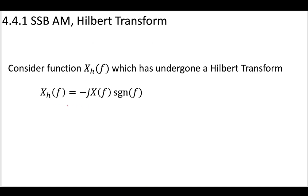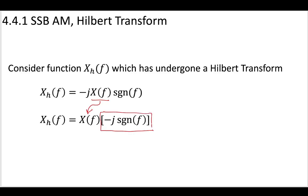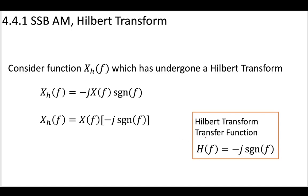Consider in the frequency domain x_h, which has undergone the Hilbert transform. We can separate this: taking our original signal and pulling apart the expression, we can see that a function x_h which has undergone a Hilbert transform means it's a signal multiplied by -j signum f. From a systems perspective, the Hilbert transform transfer function is -j signum f.